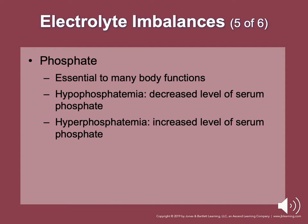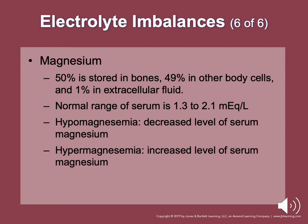Magnesium is 50% stored in the bone, 49% in body cells, and 1% in extracellular fluid. Normal range is 1.3 to 2.1 milligrams per liter. Hypomagnesemia results from decreased magnesium absorption or intake, increased renal loss of magnesium, and can be caused by diabetes, acidosis, and pregnancy. Hypermagnesemia with increased levels of serum magnesium almost always occurs due to renal insufficiency.